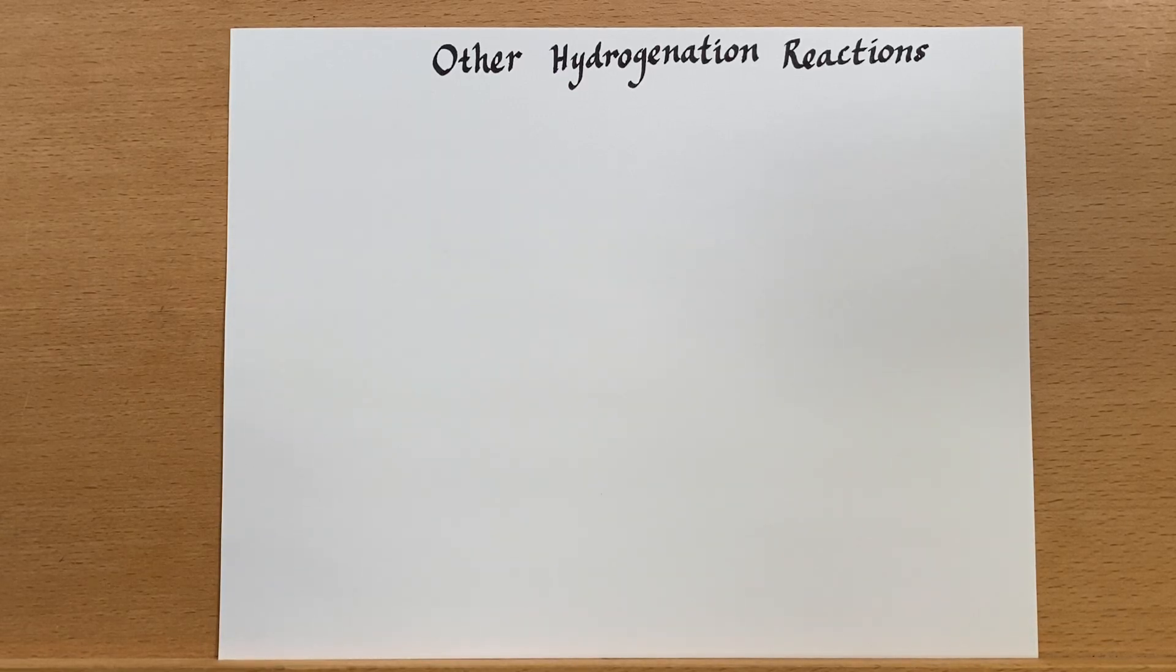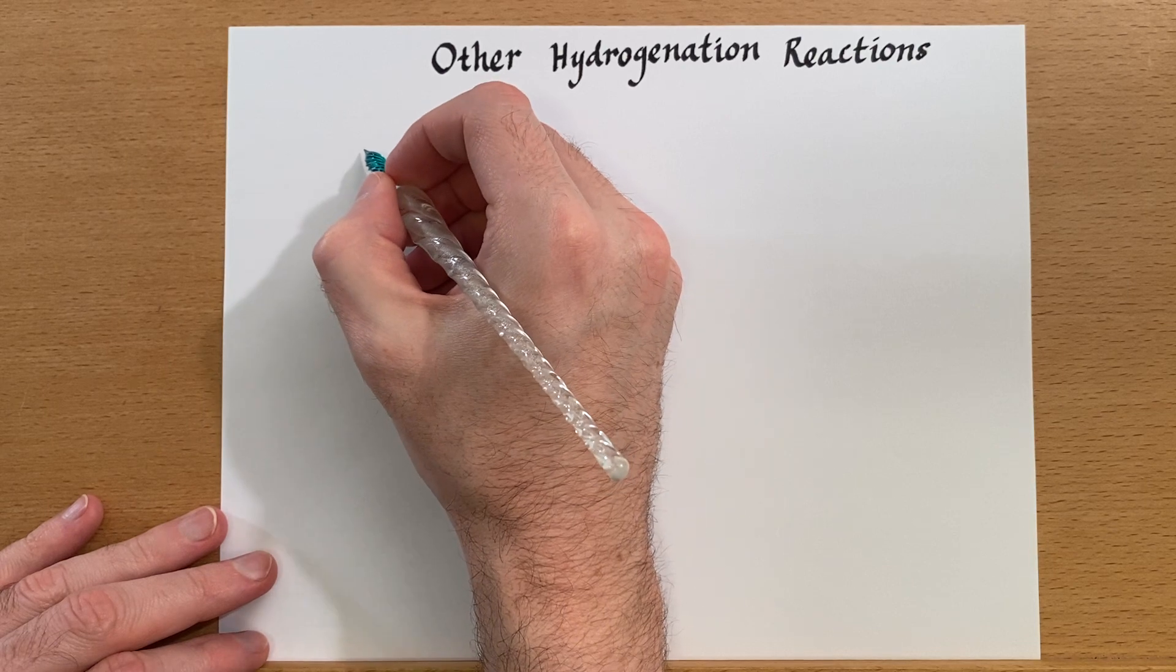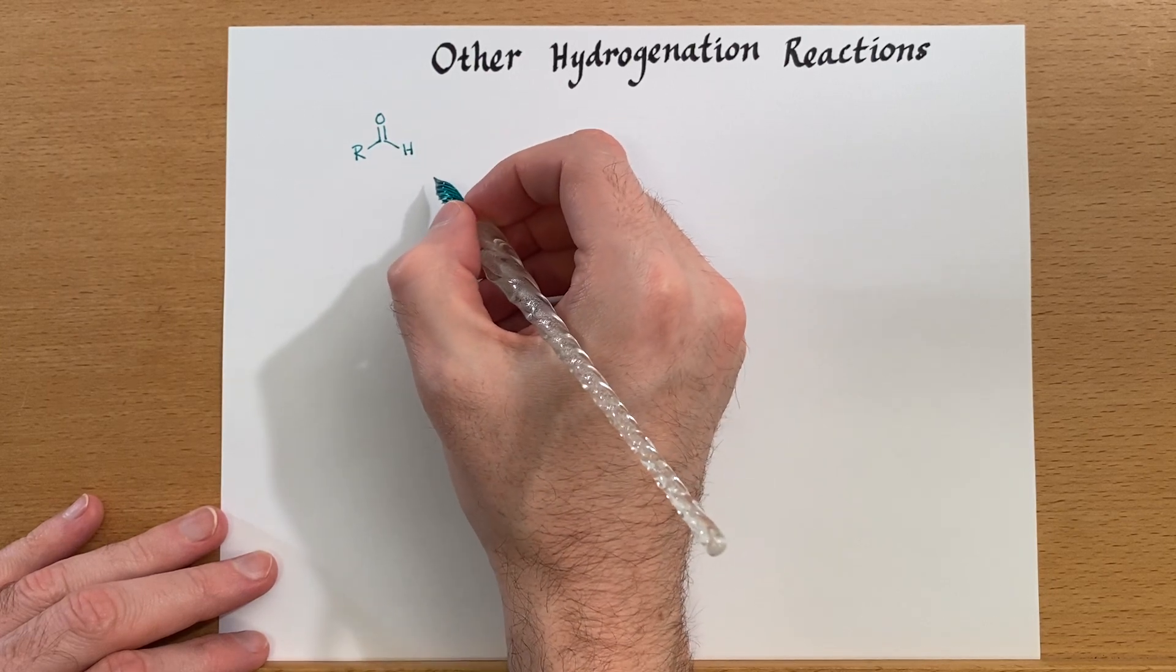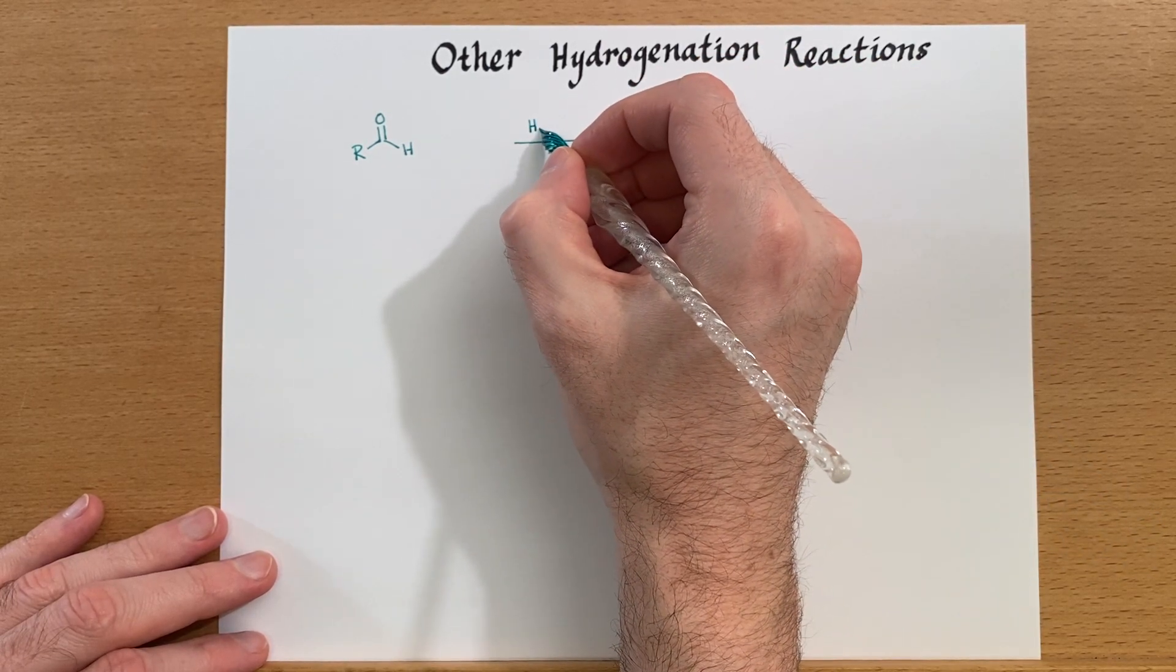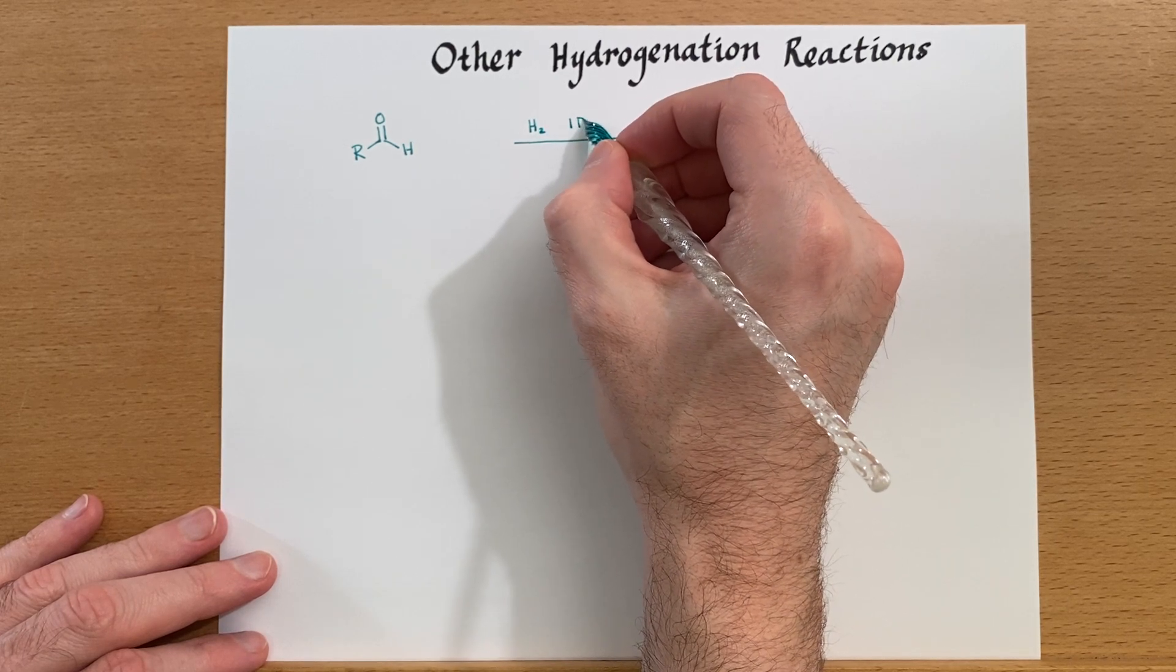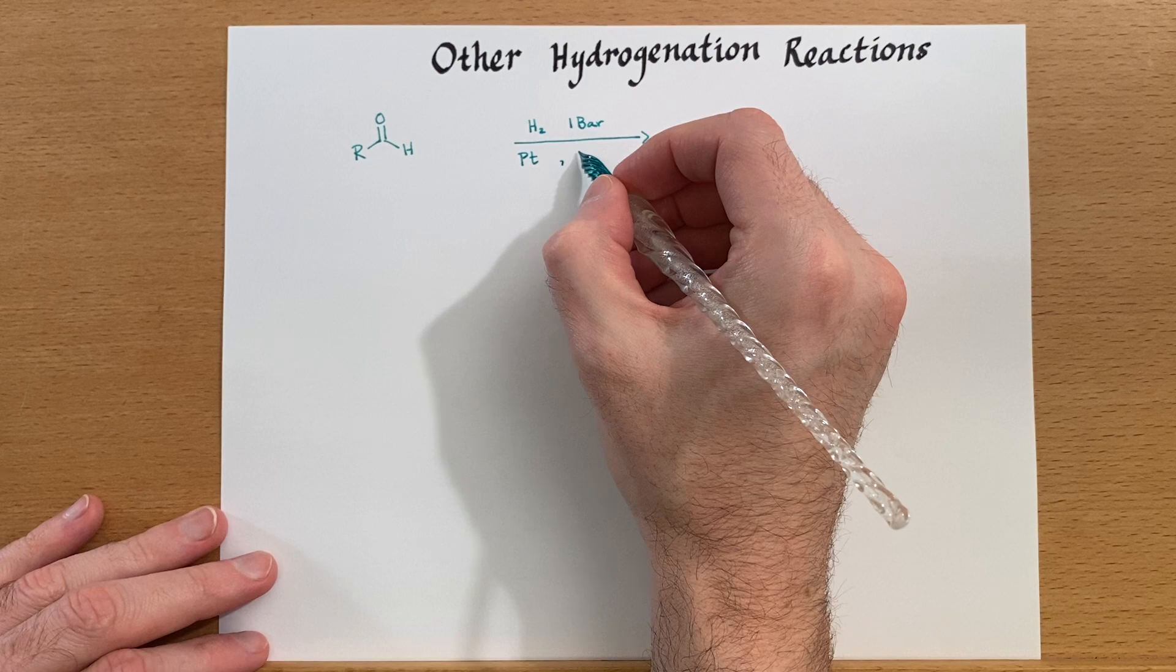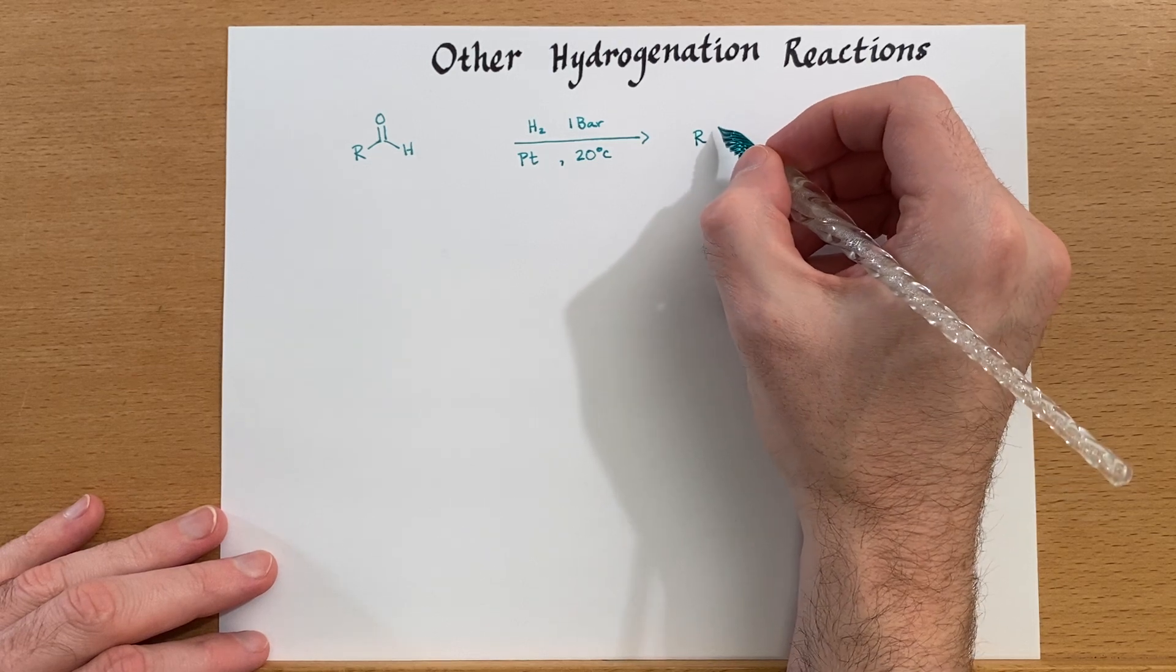So far we've talked about alkenes and alkyne reductions using hydrogenation, but it's also possible to reduce other groups with hydrogenation. Let's examine that quickly. Aldehydes are fairly reactive and under these conditions they will be reduced to primary alcohols. We have hydrogen and in this case just one bar or around one atmosphere of pressure and at room temperature, so very mild conditions, and this will be reduced to the primary alcohol.